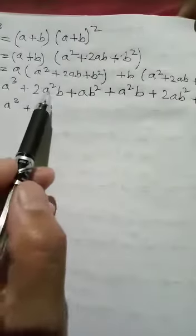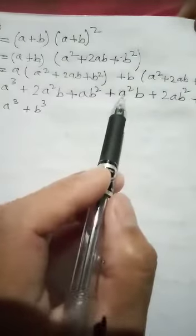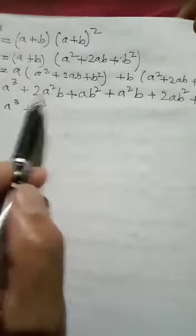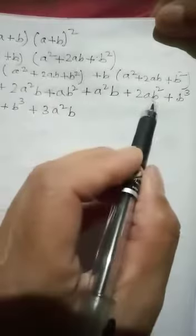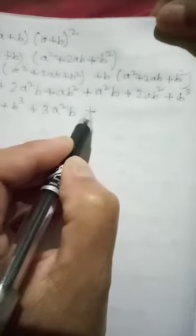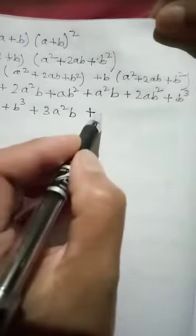Now we collect like terms. We have a²b: here we have 2a²b and here one a²b, both are plus, so 2+1 = 3a²b. For ab²: here ab² and here ab², both plus, so again 2+1 = 3ab². All remaining terms are different, so we cannot combine them further.